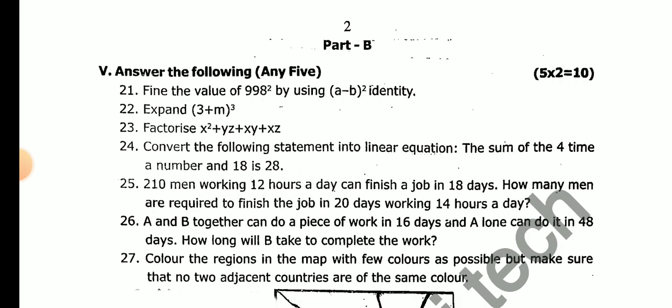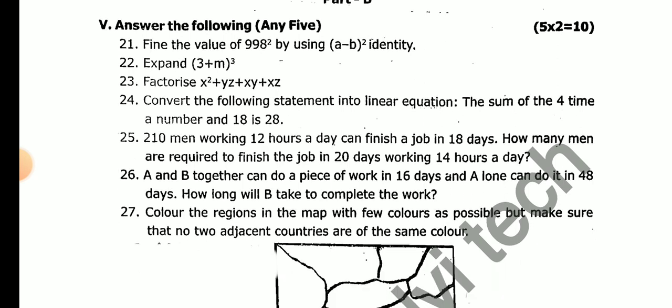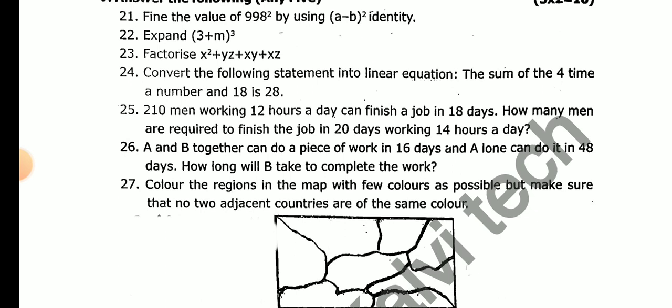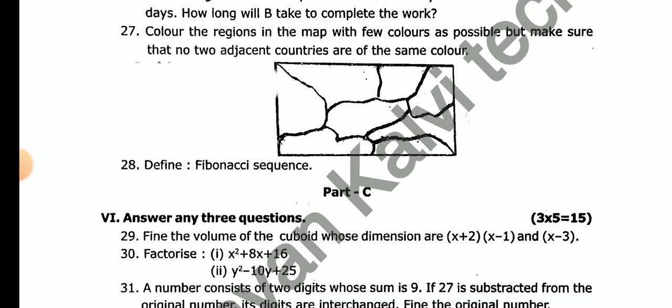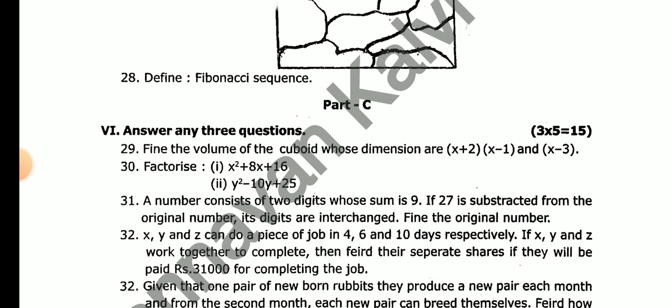2 mark questions — any 5 out of the following: expand and find the value of 998 square using (a-b) square formula; factorize x square plus yz plus xy plus xz; convert the following statement into a linear equation — the sum of four items; color the regions of the map using the fewest possible colors, making sure that adjacent countries are not in the same color.